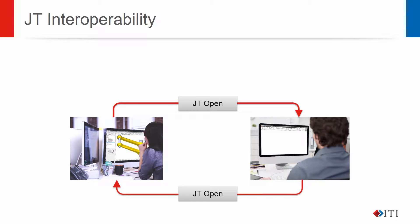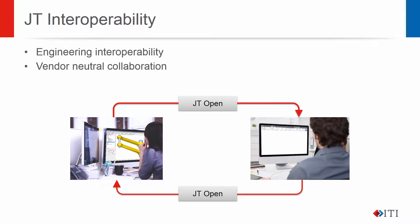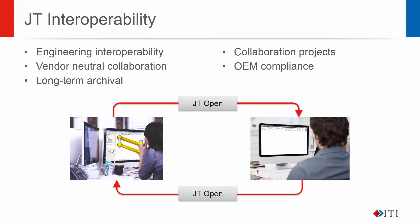The JT file format was developed by Siemens PLM software to facilitate greater interoperability between engineering design systems. JT is the preferred neutral file format for a number of leading automotive manufacturers and is also used for archival strategies and collaboration in other industrial sectors. Your company may have decided to use JT as a neutral format for collaboration because of company policies, or this may have been dictated by a supplier agreement with your customer.